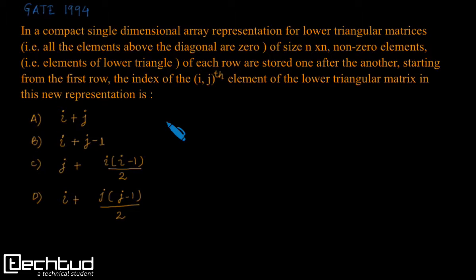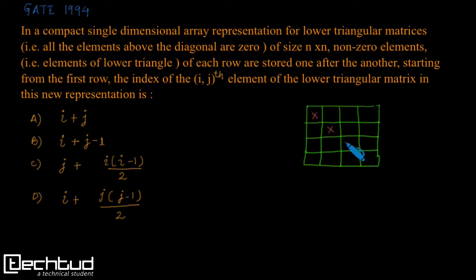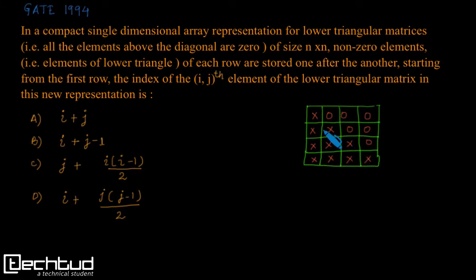This question involves a lower triangular matrix. Consider a 4 by 4 matrix for simplicity. A lower triangular matrix is a matrix in which every cell above the diagonal is 0, while the diagonal elements and everything below the diagonal have some entries. For this question, we just need to know what a lower triangular matrix is.